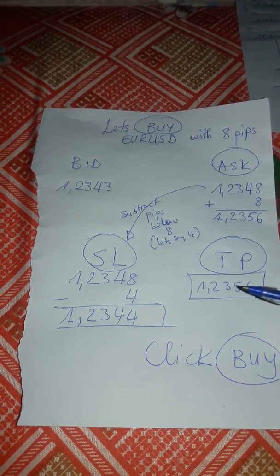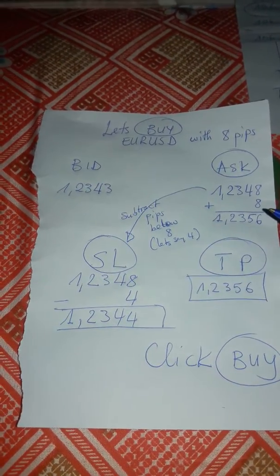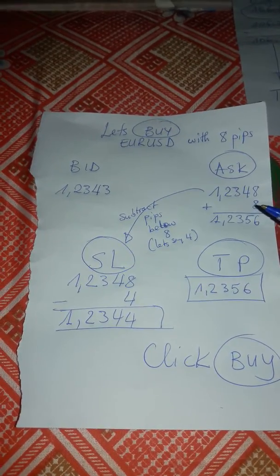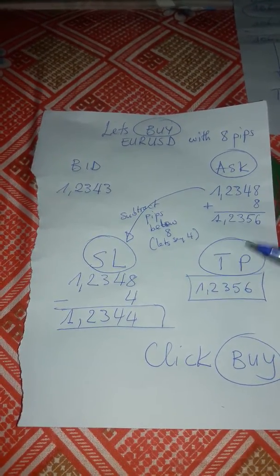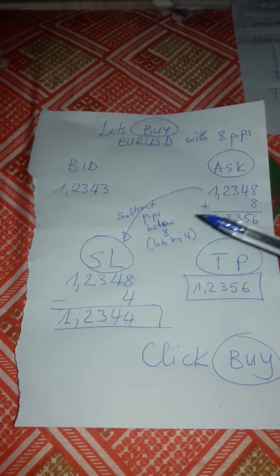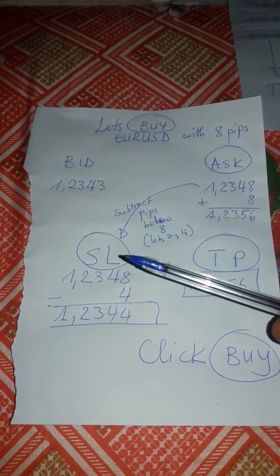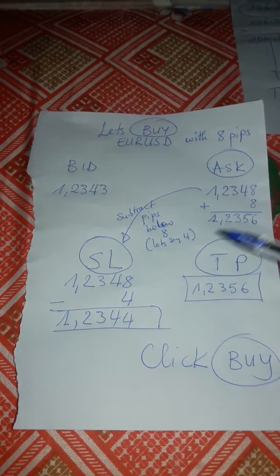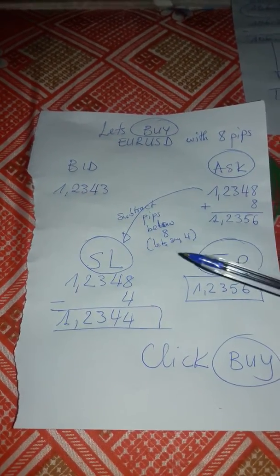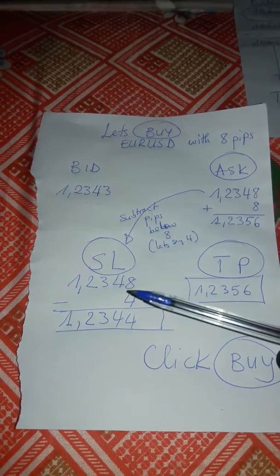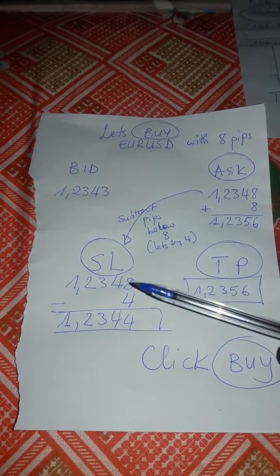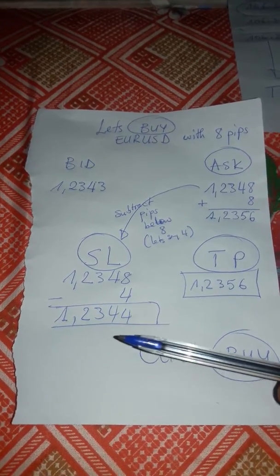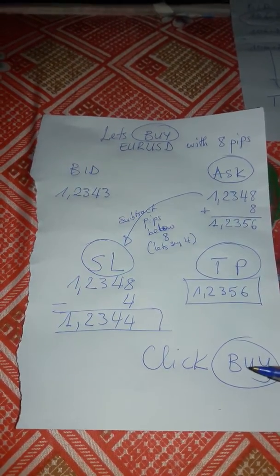So when buying, we use the ask price. We add pips to make up our take profit. For the stop loss, we subtract a few pips which is less than 8 — that's why I choose 4 here. Then I go and enter the value where we find our stop loss, and we click buy.